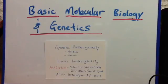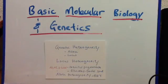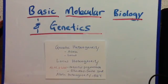A key takeaway is that for people with autosomal recessive diseases, they usually have compound genotypes. To summarize, genetic heterogeneity has two types: allelic heterogeneity — different mutations at the same locus — and locus heterogeneity — mutations at different loci.